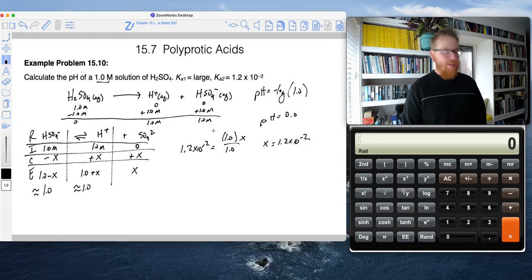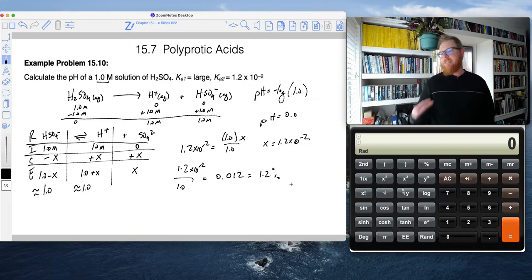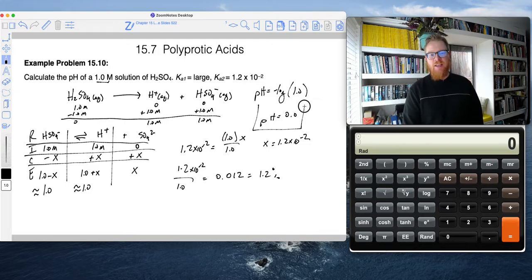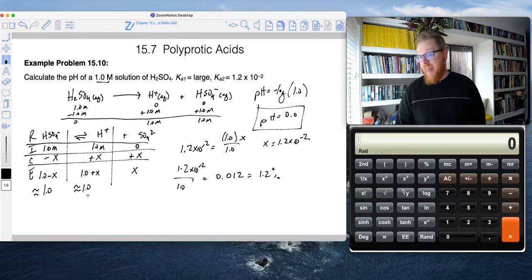And now if we want to test our 5% rule, we're going to take that 1.2 times 10-2, all divided by the 1.0. And I can do that in my head. That's 1.2 times 10-2, which is the same as 0.012. And if I turn that into a percentage, that's 1.2%. So the 5% rule checks out and we can see that just calling the pH 0.0 from an H+ concentration of 1.0, that works.